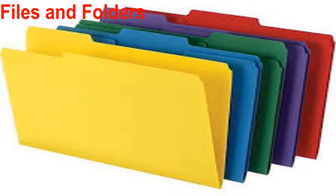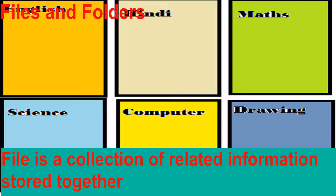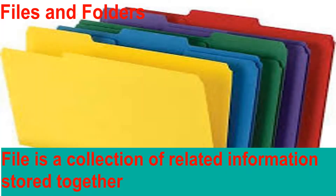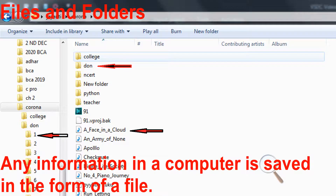A file is a collection of related information stored together. Just as we keep important papers in a file, similarly any information in a computer is saved in the form of a file.